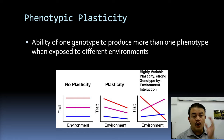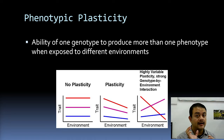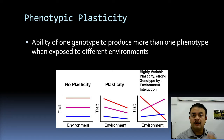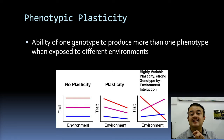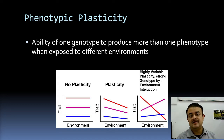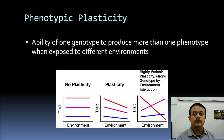Another term is phenotypic plasticity — the ability of one genotype to produce more than one phenotype when exposed to different environments. For example, homozygotic twins: if one is raised in Africa and another in Scandinavia, the melanin expression will differ even though genotypically the two are exactly the same. Homozygotic twins have no difference at all in their genome.